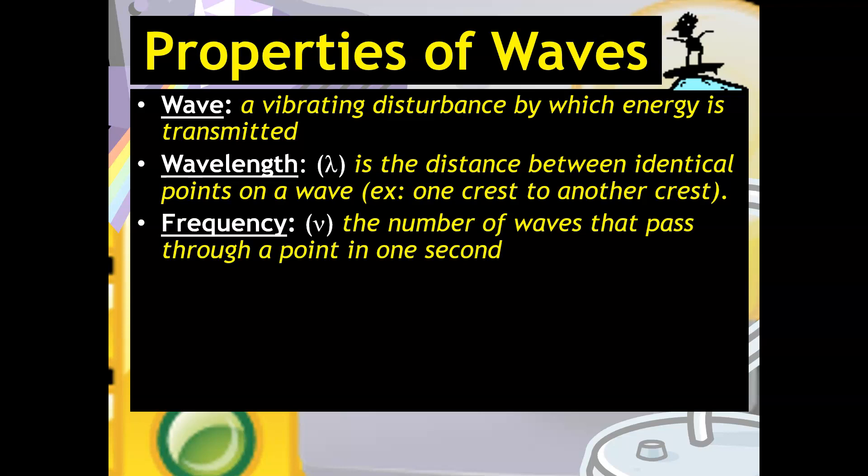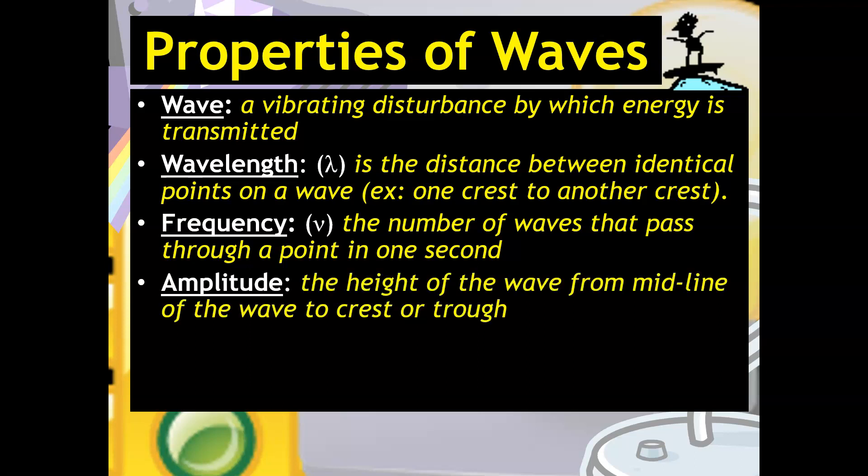Frequency has the symbol nu, which looks like a V. And this is the number of waves that would pass through a point in one second. And then amplitude is really the height of the wave from the midline of the wave to the crest or trough. And I'm going to show you in a picture of this, just so you can understand what each of these definitions are.